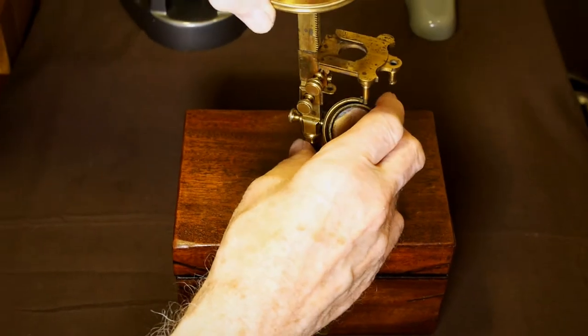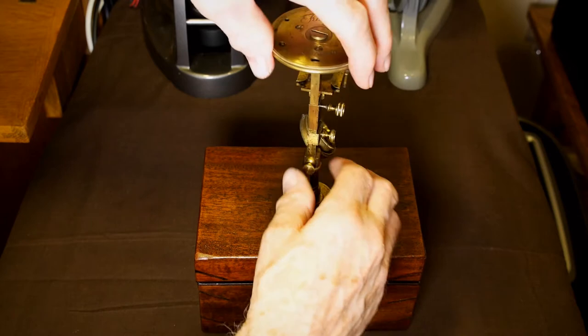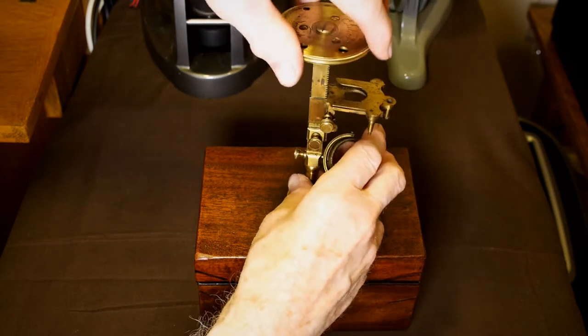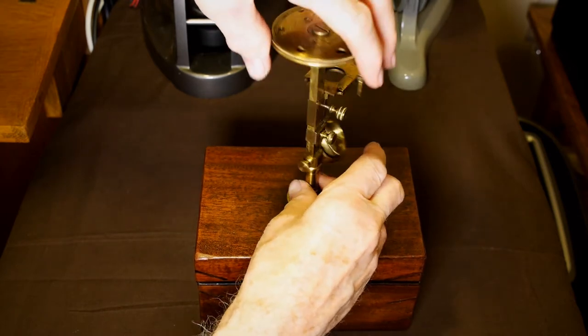This brass microscope has six round glass lenses ranging from x5 to x60 magnification, which are mounted between the rotating turret plates.